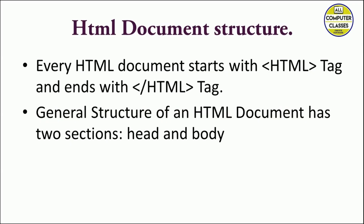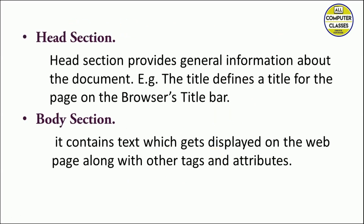HTML document structure consists of two things: head and body. These head and body sections are always mentioned within the HTML tags. Every HTML document starts with an opening HTML tag and ends with a closing HTML tag. Within these HTML tags we have the head section and the body section. The head section provides general information about the document — for example, the title defines a title for the page on the web browser's title bar. The body section is the biggest section of the HTML document and contains the text displayed on a web page along with other tags and attributes.